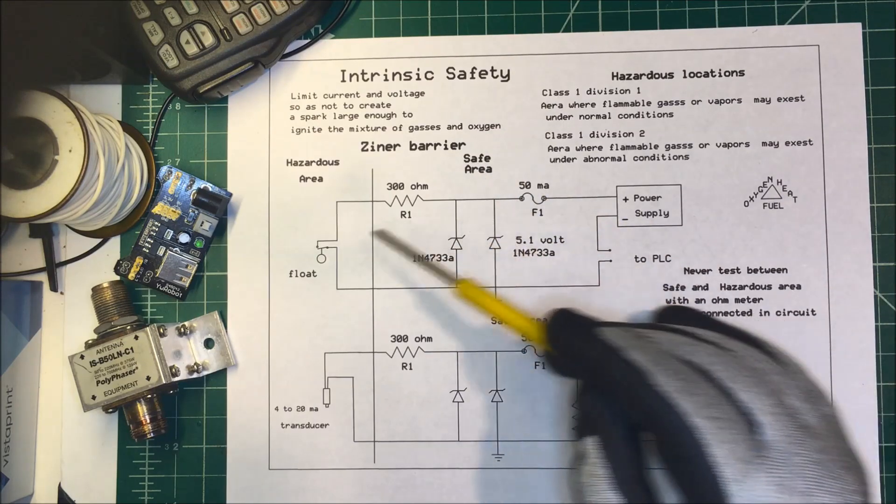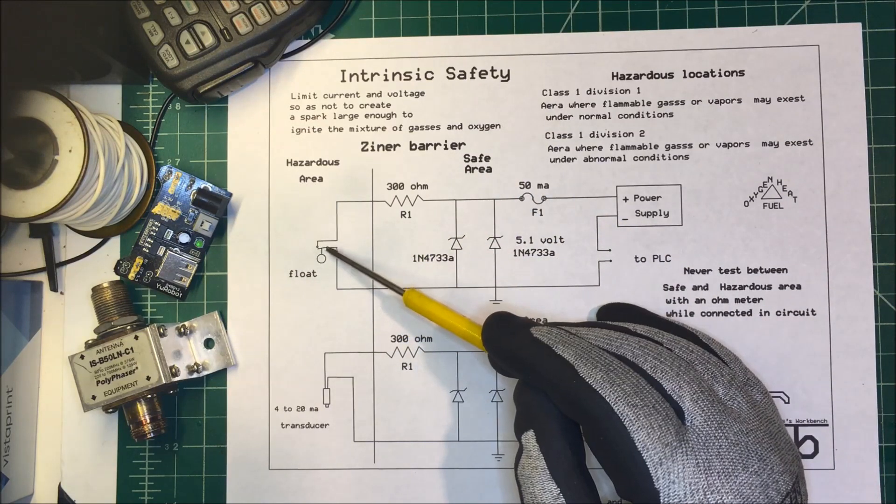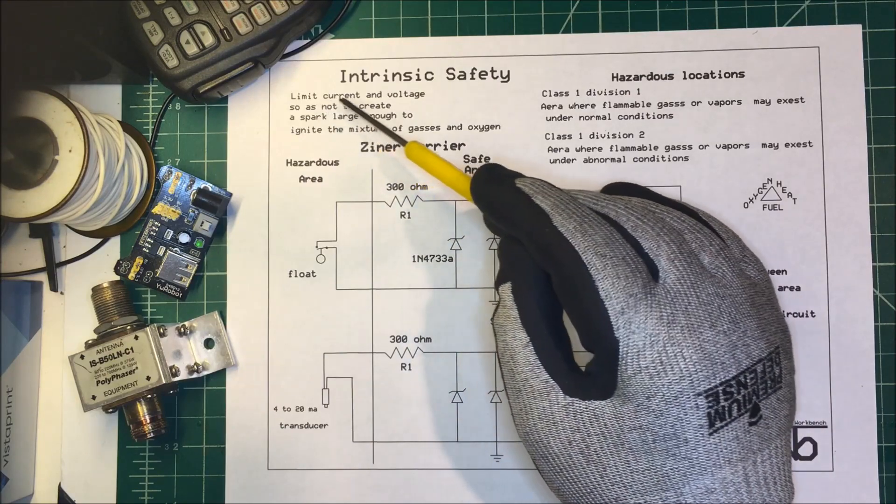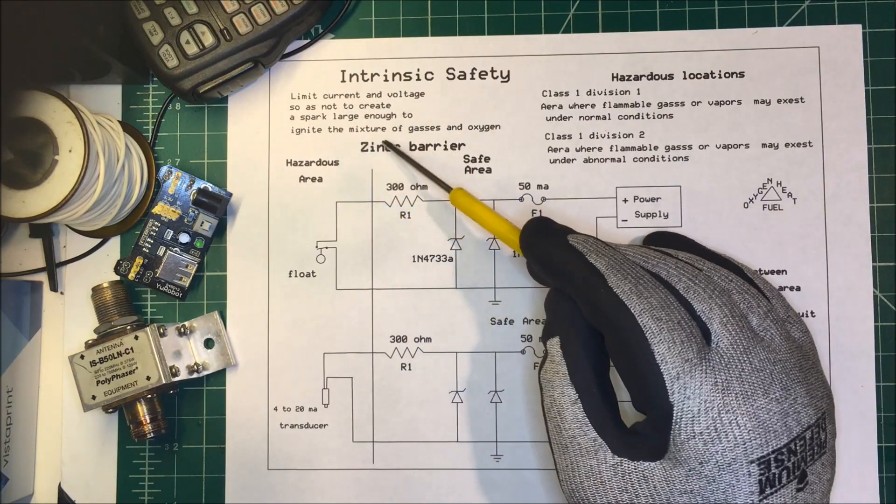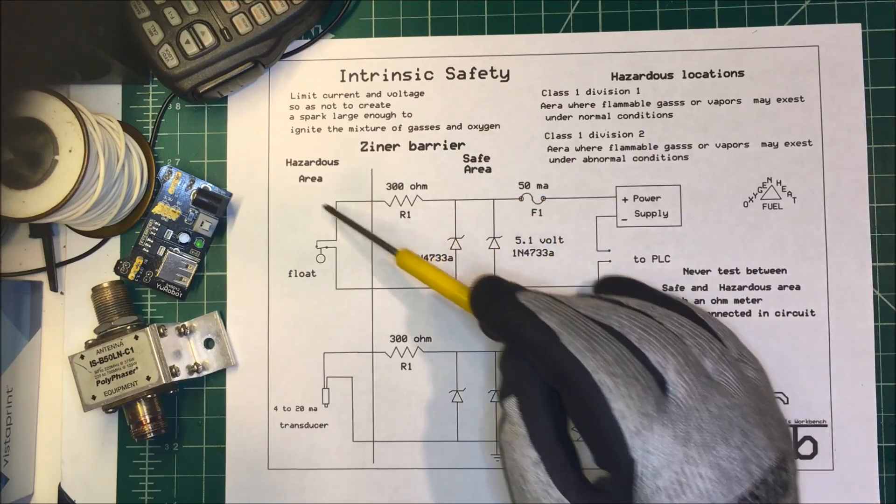This area here is a safe area and this over here is your hazardous area. What we want to do is limit the current and voltage so as not to create a spark large enough to ignite the mixture of gases and oxygen.